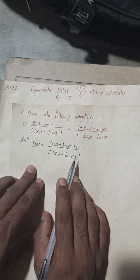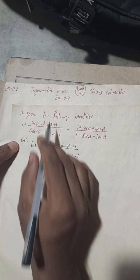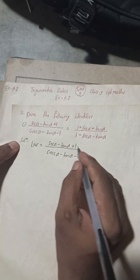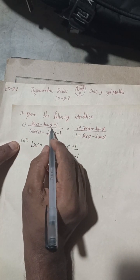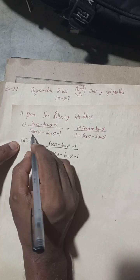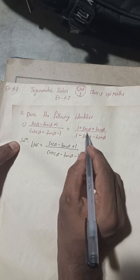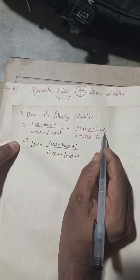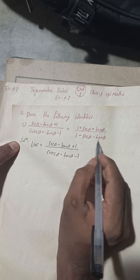This is now 11c: prove the following identities. sec α minus tan α plus 1 by cosec α minus tan α minus 1 is equal to 1 plus sec α plus tan α by 1 minus sec α minus tan α.